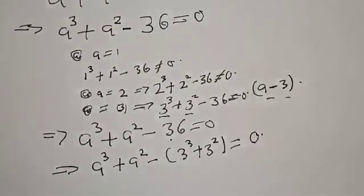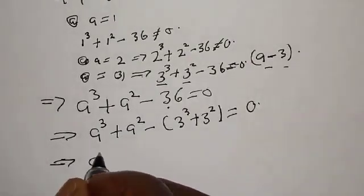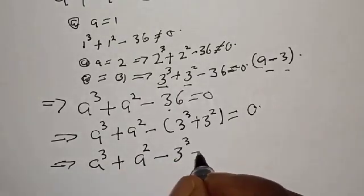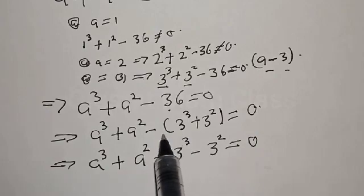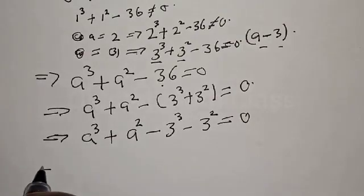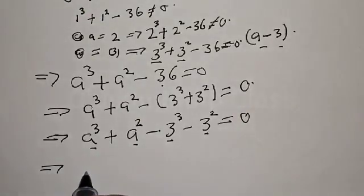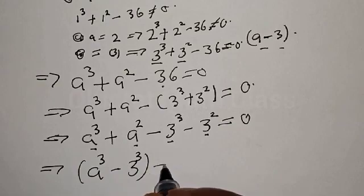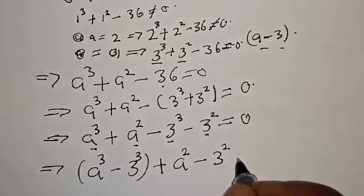Remember, A minus 3 is one of the roots. This implies that we have A raised to the power 3 plus A squared minus 3 raised to the power 3 minus 3 squared equal to 0. When you open this bracket with the minus, minus 3 becomes minus, then minus stands, it will become plus. This implies that we have A raised to the power 3 minus 3 raised to the power 3, then plus A squared minus 3 squared equal to 0.